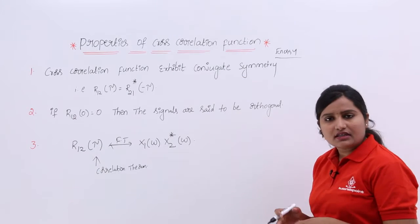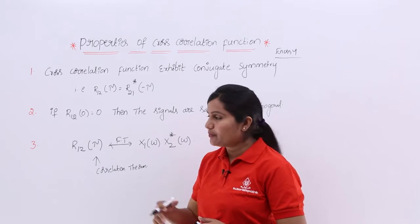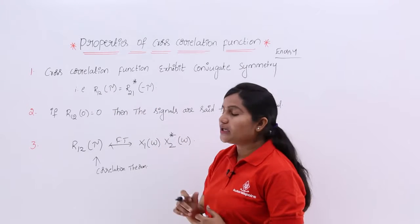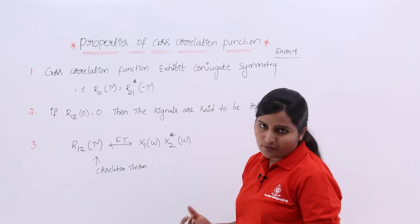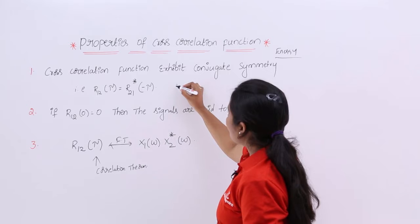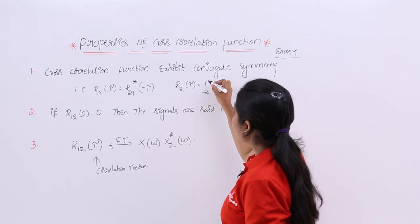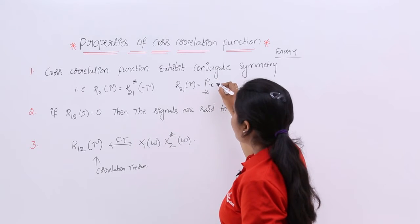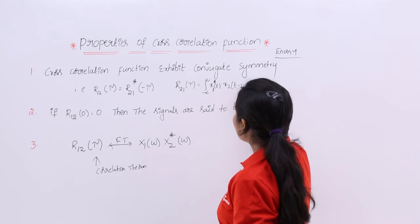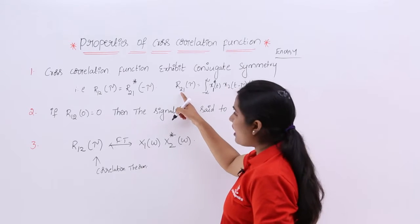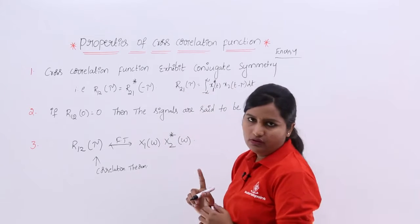This we already discussed in autocorrelation function also. Here also, cross correlation function exhibits conjugate symmetry property, that is R12 of tau is equivalent to R21 star of minus tau. For example, R21 of tau is equivalent to integral minus infinity to infinity x1 star of t into x2 of t minus tau dt. When writing R21, you need to consider star for the second function.